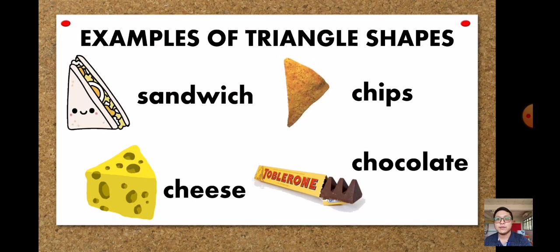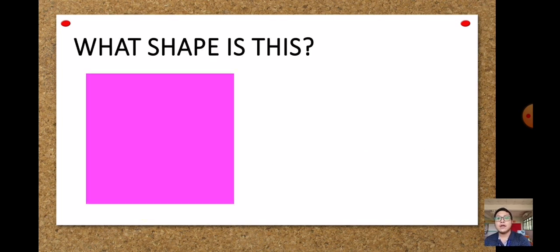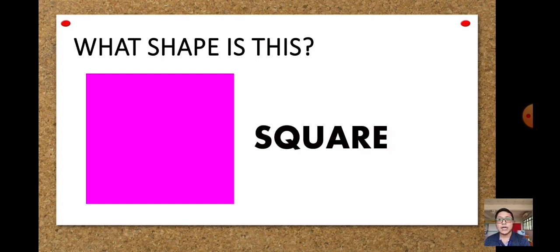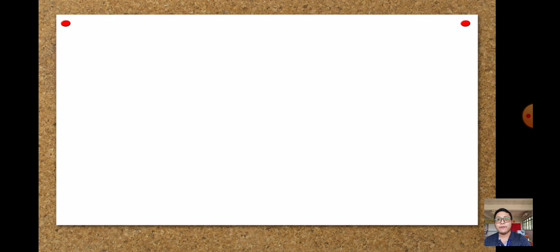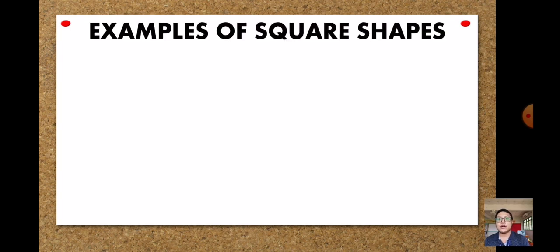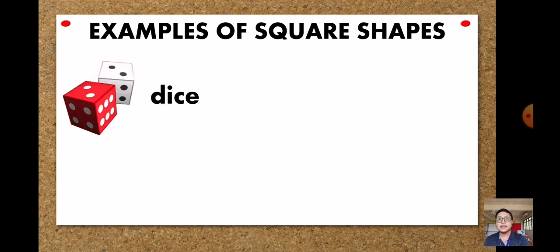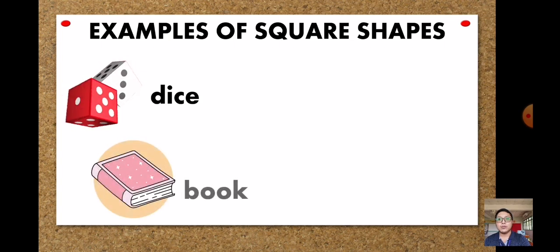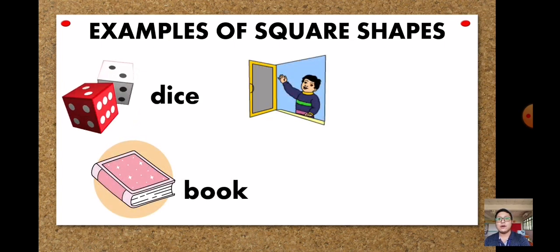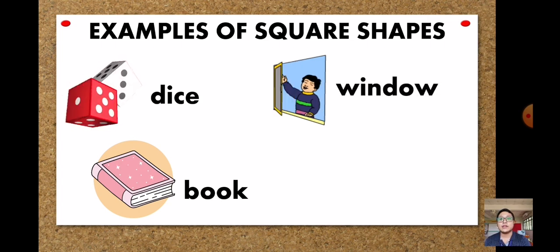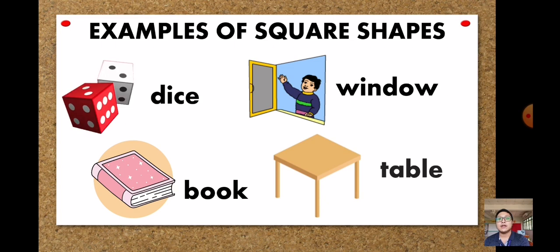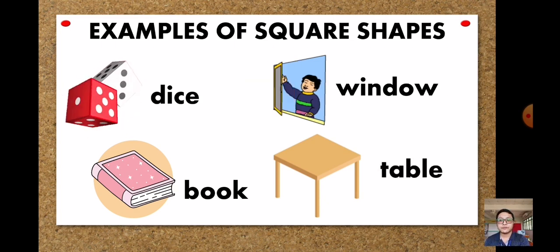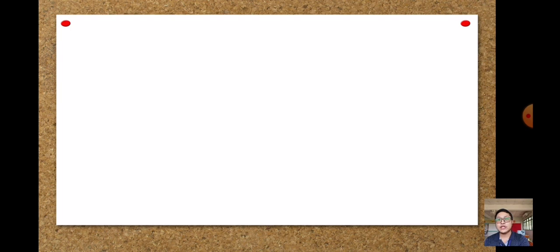Next we have this shape — this is a square. A square has four sides. Examples of square shapes: we have dice, a book, a window, and a table. So that is the square shape.